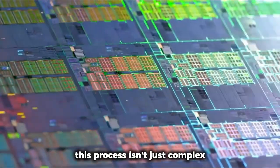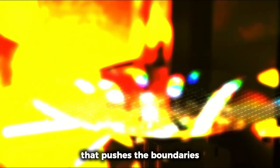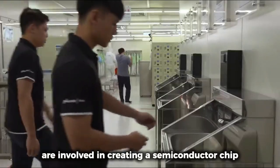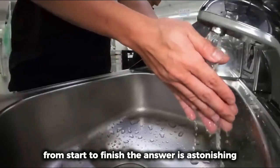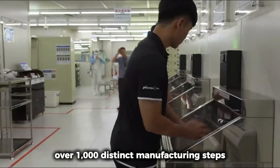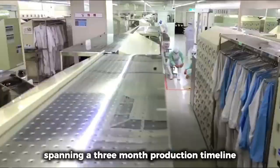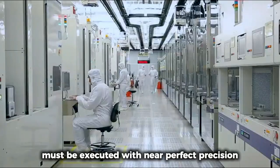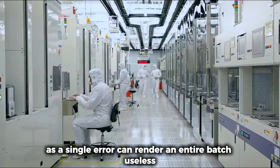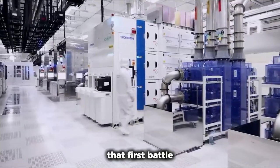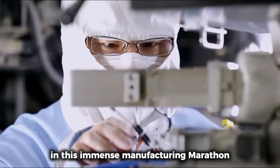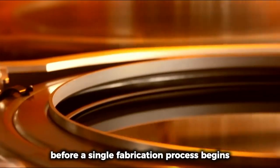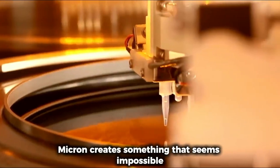Before a single chip reaches your device, it travels through a manufacturing gauntlet that would be unrecognizable to most consumers. This process isn't just complex—it's a marvel of human ingenuity that pushes the boundaries of what's physically possible. How many steps do you think are involved in creating a semiconductor chip from start to finish? The answer is astonishing: over 1,000 distinct manufacturing steps spanning a three-month production timeline. Each of these steps must be executed with near-perfect precision, as a single error can render an entire batch useless.